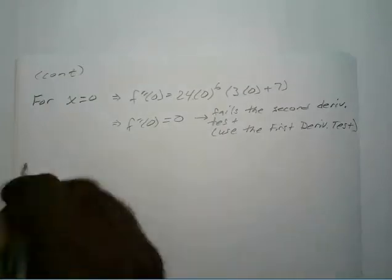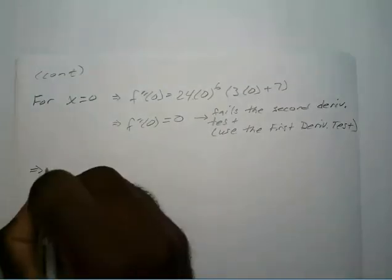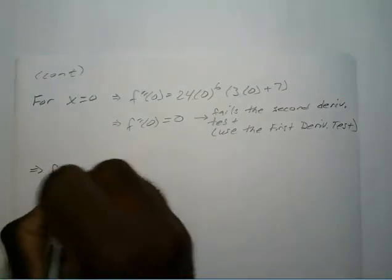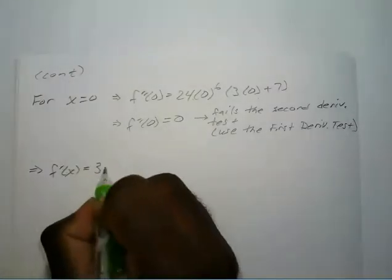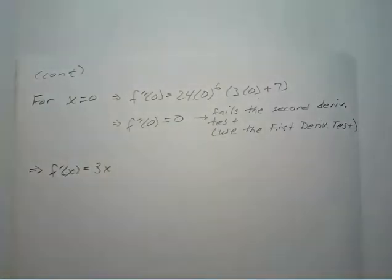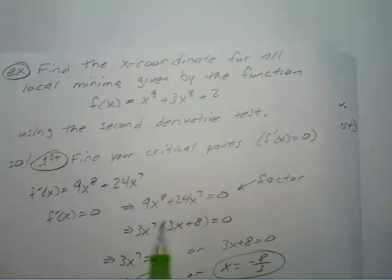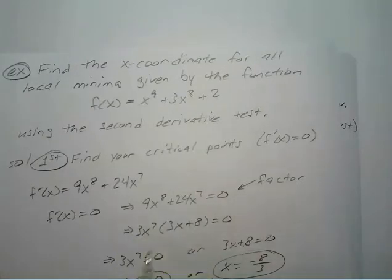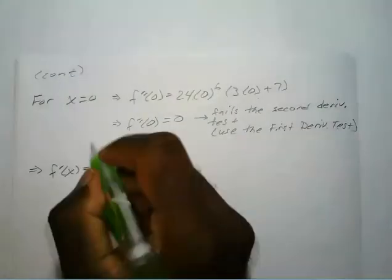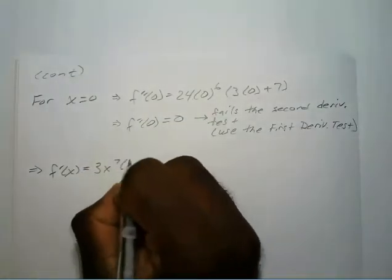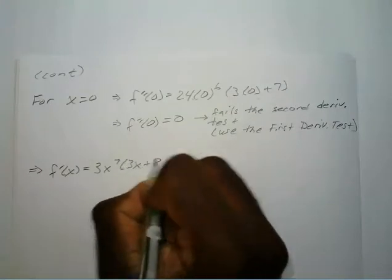So when it fails the second derivative test, we have to use the first derivative test. We already know our first derivative, factored as 3x to the 7th times 3x plus 8.